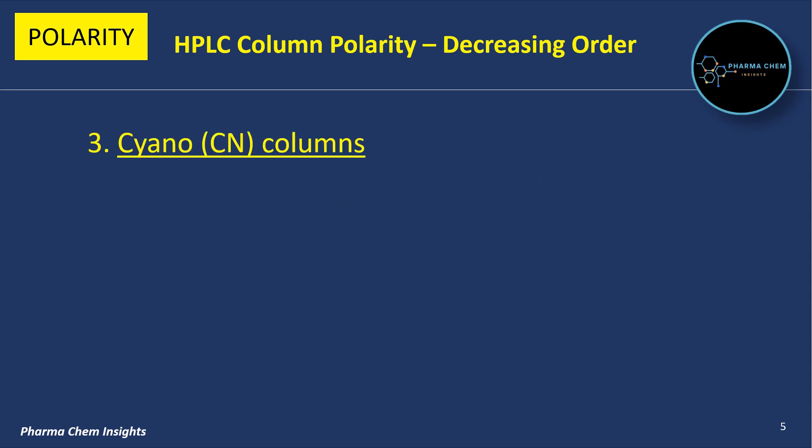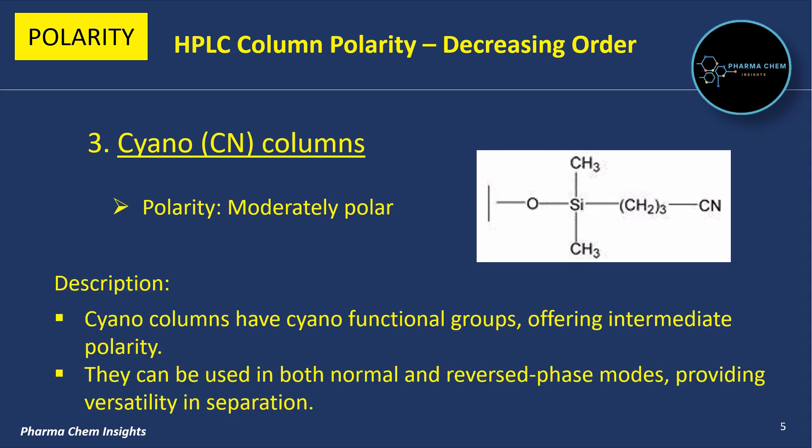Next is the Cyano column. Its polarity is moderately polar. Cyano columns have cyano functional groups offering intermediate polarity. They can be used in both normal and reverse phase modes, providing versatility in separation.